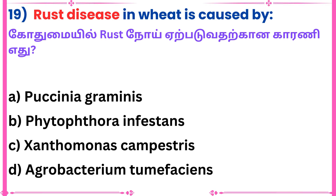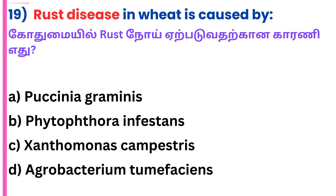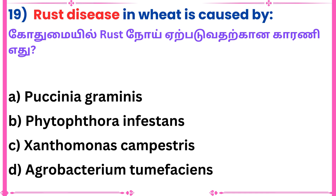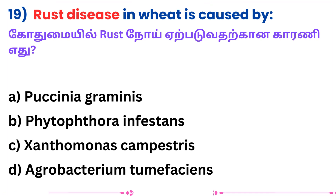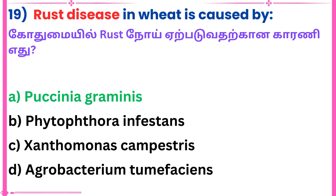Question 19: Rust disease in wheat is caused by — Answer: Puccinia graminis.